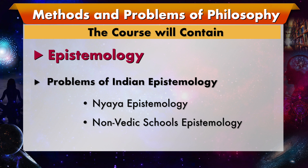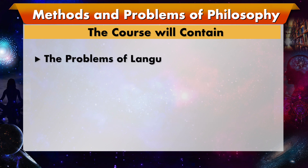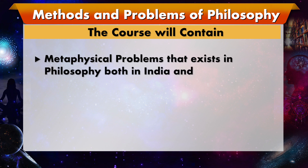Along with Indian epistemology, we would also be dealing in the subsequent part with the problems of language. Within this perspective of problems of language, we deal with the context theory of meaning. In addition to this theory of knowledge, we try to include the problem of meaning, problem of language, and problem of theory of language.